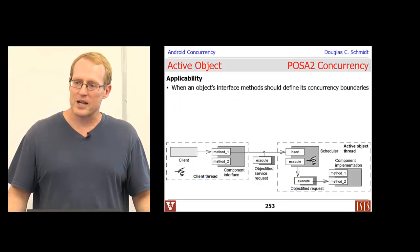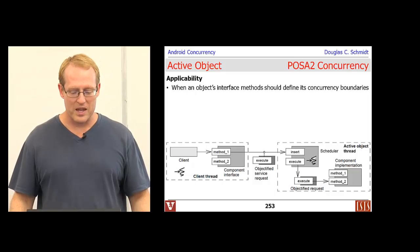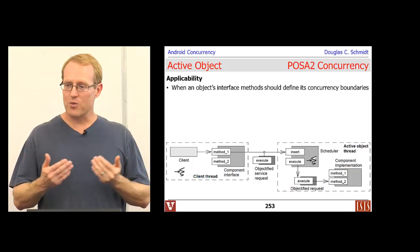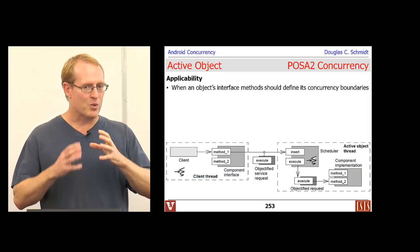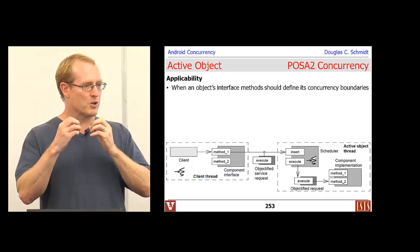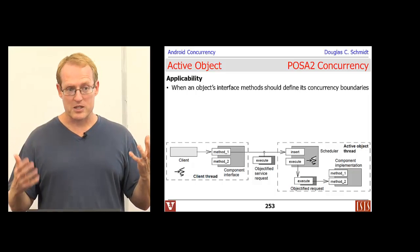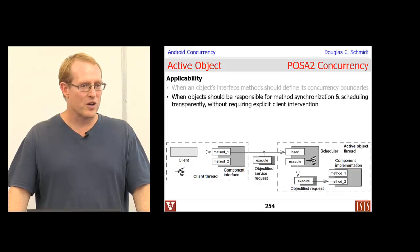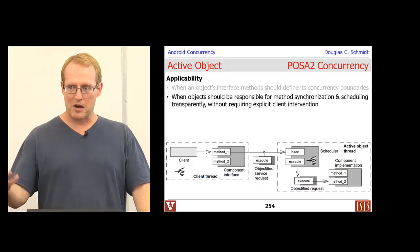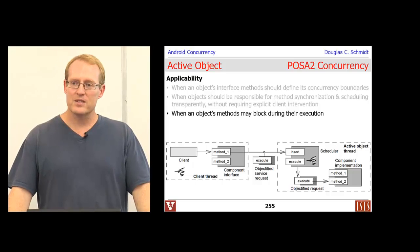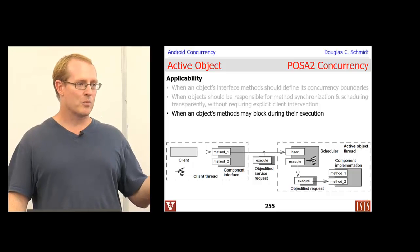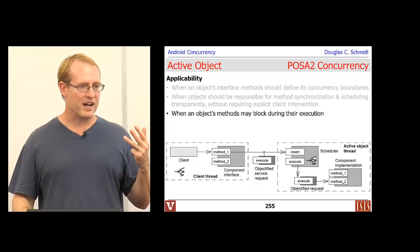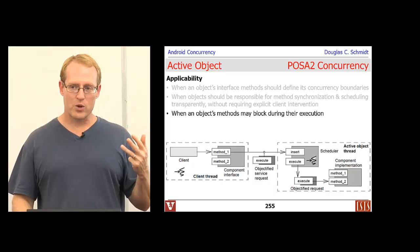When would you want to apply this pattern? One circumstance is when you want the methods of an object's interface to define its concurrency boundaries — much like with monitor object, when you make a method call, you want that to be where the boundary of concurrency is managed. You should also do this when you want the object to do all the work internally and not make the client responsible, and if the methods you call may need to block — maybe they download a big file or do a long-running computation.